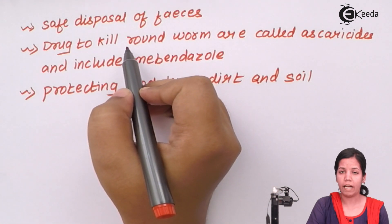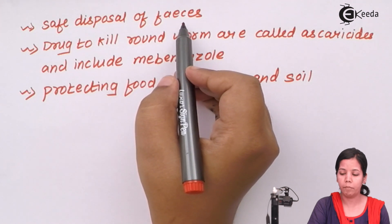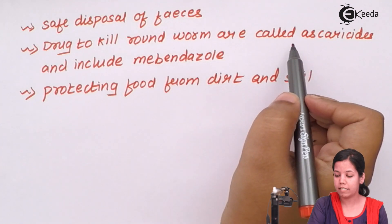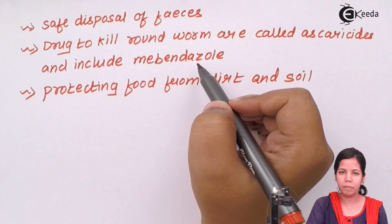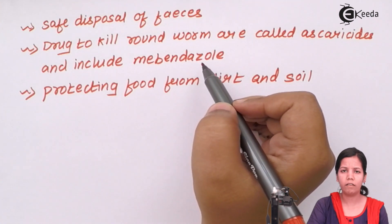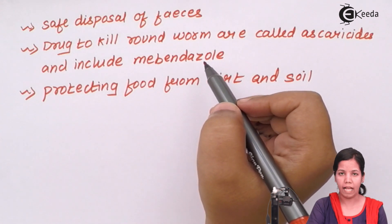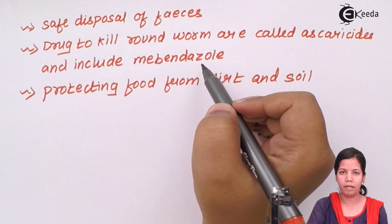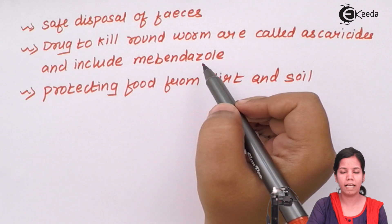To cure Ascaris and prevent its spread, safe disposal of fecal matter infected with Ascaris lumbricoides should be done. Certain drugs are available to kill this roundworm, termed as ascaricides, which include mebendazole. It is advised that once every six months, one should take one of these drugs to kill any present worms. Anyone who eats even a small amount of junk food is prone to Ascaris, so having one mebendazole or anti-Ascaris tablet helps clear it out.